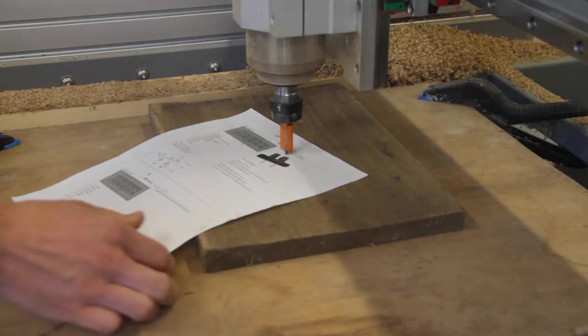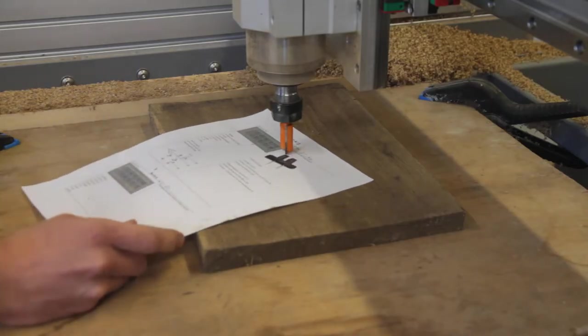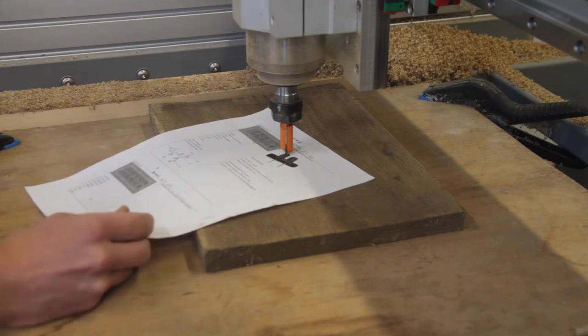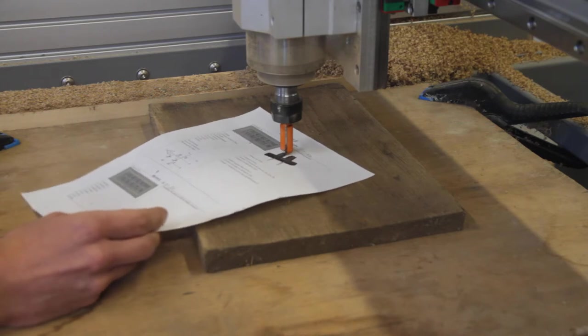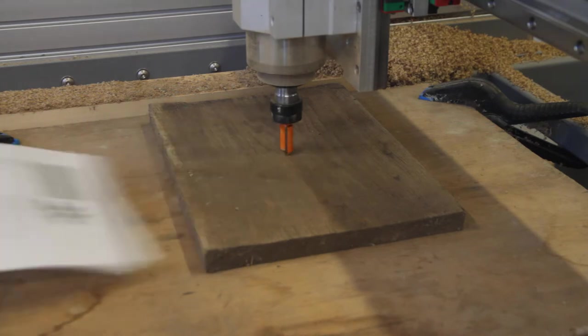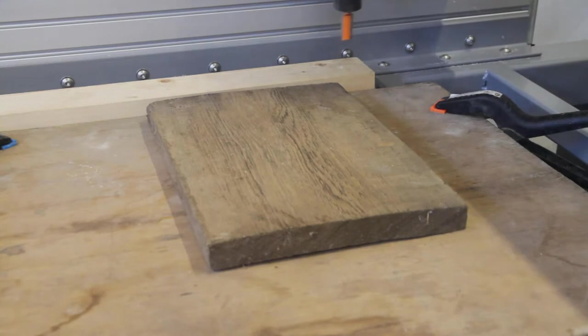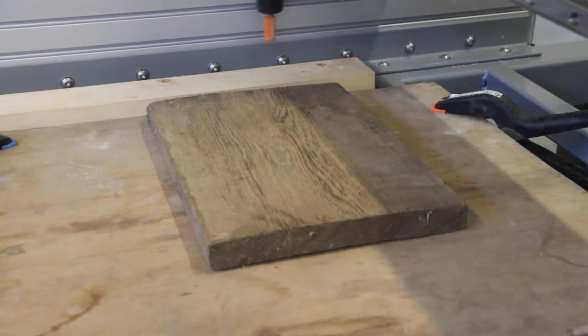Now it's nearly time for the fun part. First the CNC needs to be zeroed or the origin point needs to be set so that the CNC software knows where the stock origin is. To do this I used a piece of paper to feel when the cutter starts to grab onto it.